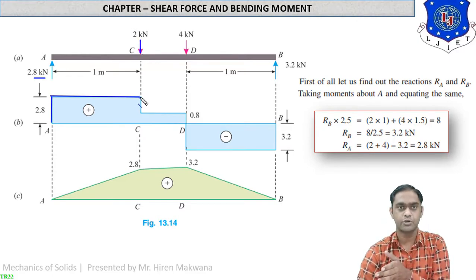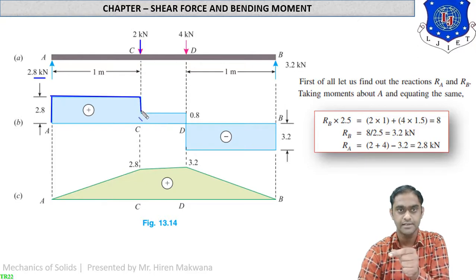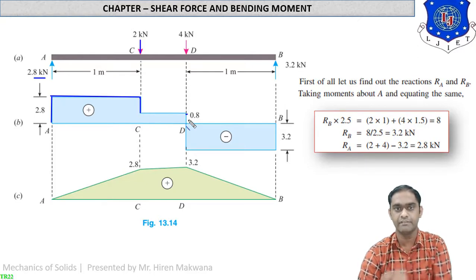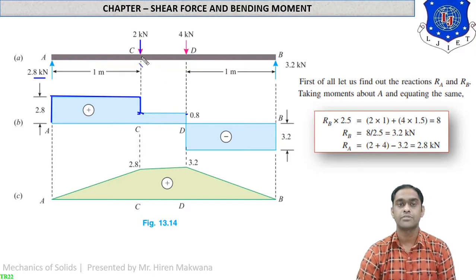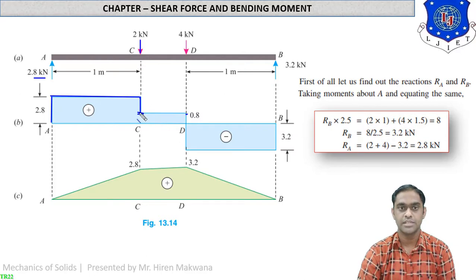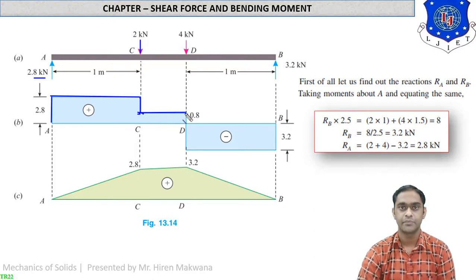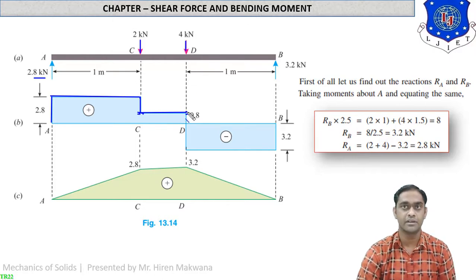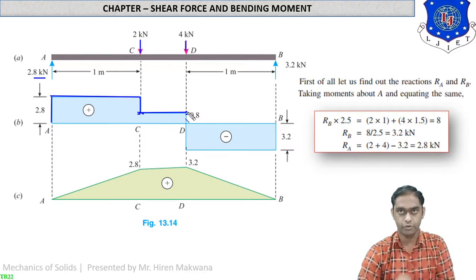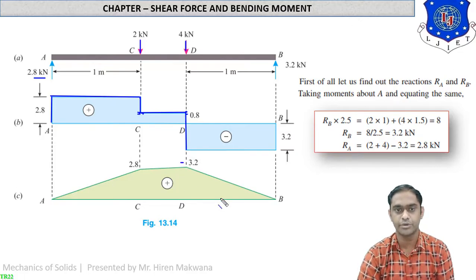Standing at 2.8, subtracting 2 kN at point C gives a remaining value of 0.8. From C to D there is no load, so the horizontal line at 0.8 continues to point D. At point D there is a load of 4 kN vertically downward. Standing at 0.8, subtracting 4 gives 0.8 − 4 = −3.2, a negative value of 3.2 at point D.